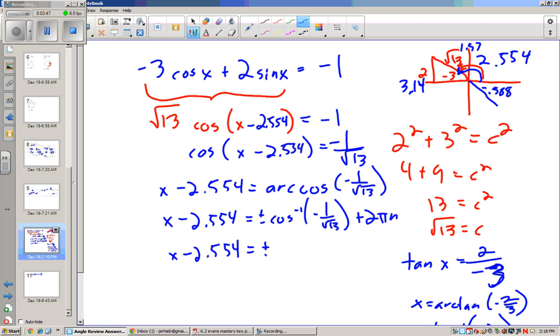Now, the inverse cosine, again keeping your calculator in radian mode, is negative 1 over root 13.